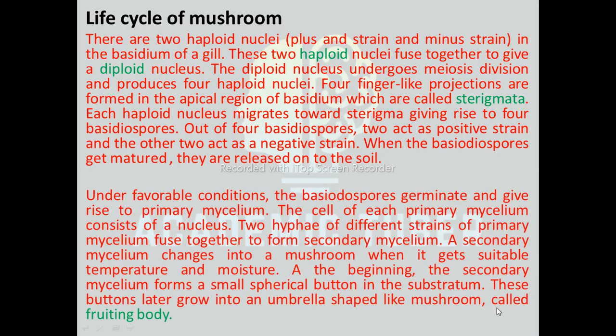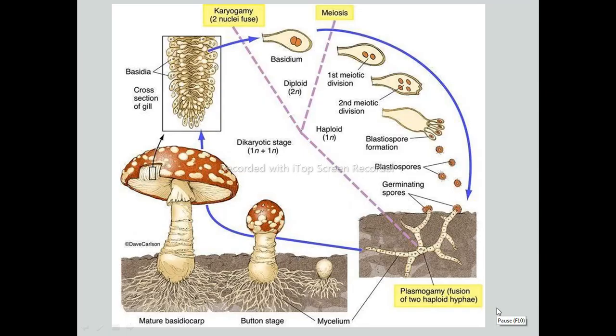Under favorable conditions, the basidiospores germinate and give rise to primary mycelium. Each cell of the primary mycelium consists of one nucleus. Two hyphae of different strains of primary mycelium fuse together to form secondary mycelium. Secondary mycelium develops into a mushroom when given suitable temperature and moisture. At the beginning, the secondary mycelium forms a small spherical button in the substratum. These buttons later grow into an umbrella-shaped mushroom called the fruiting body. Thus, one mature mushroom produces basidiospores, releasing them into the suitable environment and continuing the life cycle of mushroom.